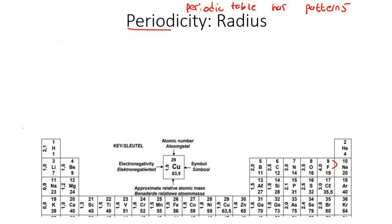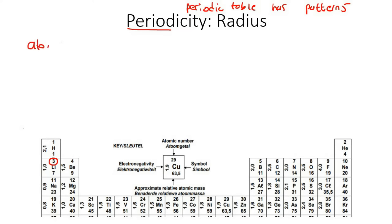So what we're going to do is take lithium, beryllium, and boron, and draw their atoms. For lithium, it has a nucleus. The atomic number is three, which means it also has three protons, because the number of protons is the same as the atomic number.